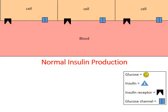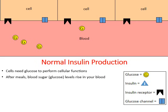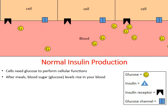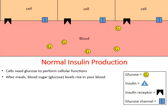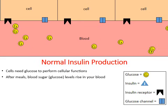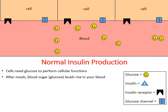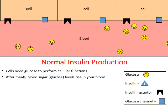Let's look at normal insulin production first. Cells need fuel in order to perform their cellular functions, and that fuel comes in the form of a sugar molecule called glucose. After a meal, our meal is digested and the glucose is absorbed into the bloodstream, so our blood sugar — our glucose levels — rise.